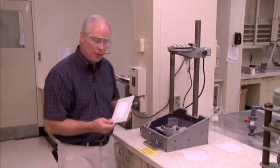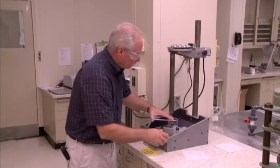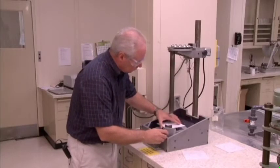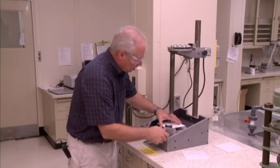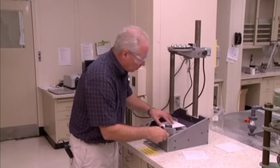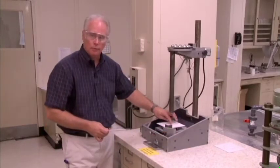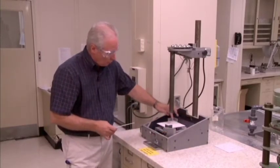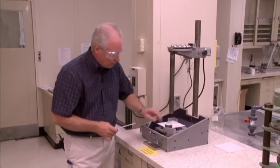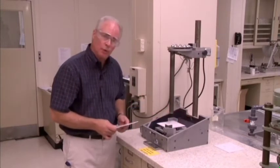Then mount that in the test equipment face down such that that three inch diameter circle is really unsupported. The tile is supported on three balls around the edges so the center section is unsupported.